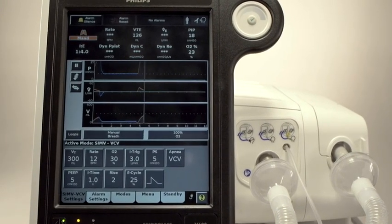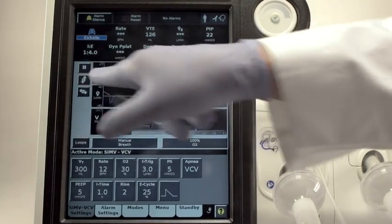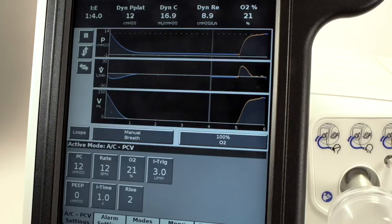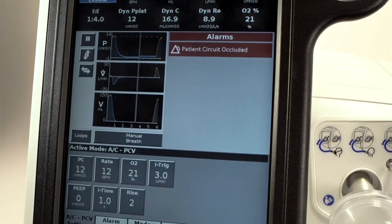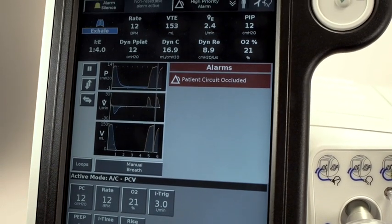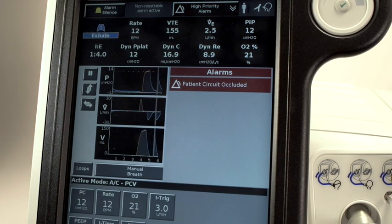V680 also has an emergency ventilation mode. In the event the exhalation side of the ventilator becomes occluded, inhalation and exhalation are performed through the inspiratory tubing like a single-limb ventilator until the occlusion on the expiratory limb is corrected.